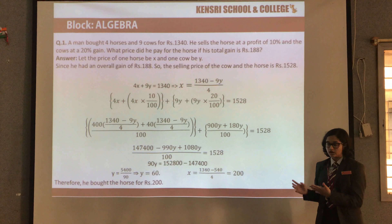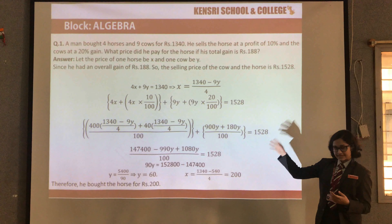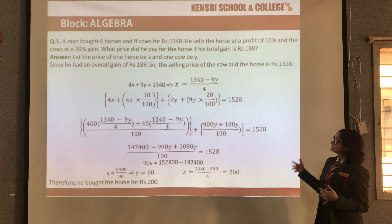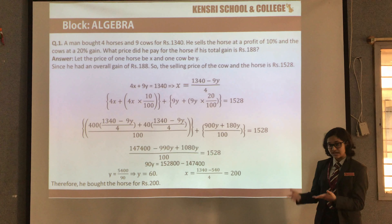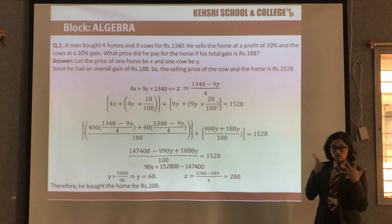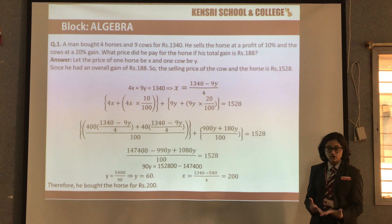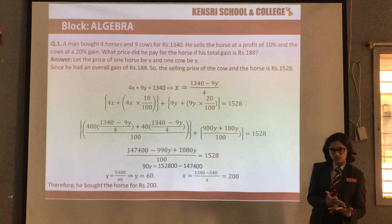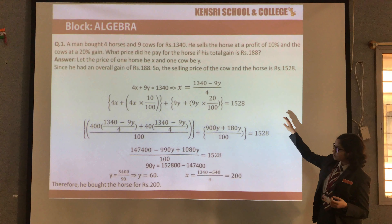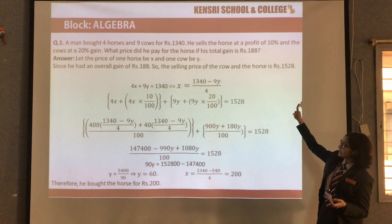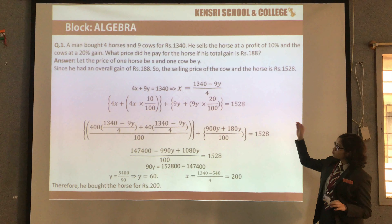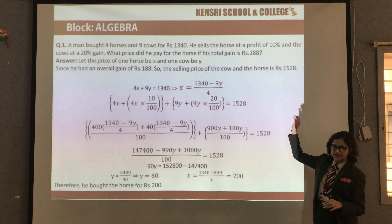Since he bought four horses and nine cows, we get 4x + 9y = 1340 rupees. He sold the horses at 10% gain and the cows at a 20% gain, so we add 10% of 4x to 4x and 20% of 9y to 9y to find the selling prices. We also add 180 to 1340 because that is the overall gain, and when we form the second equation we get 1528 as the result.